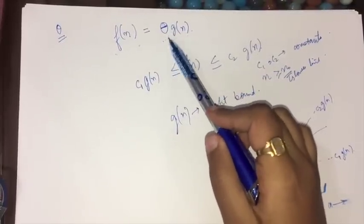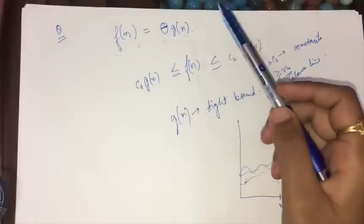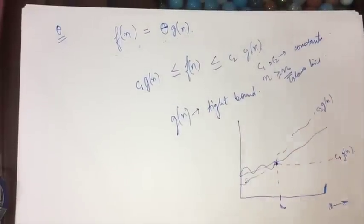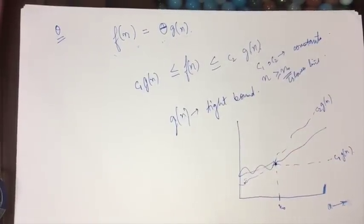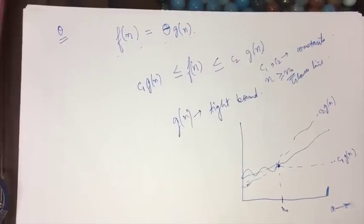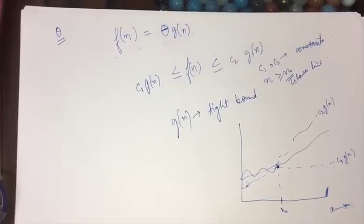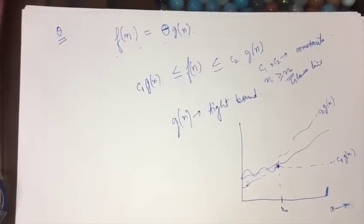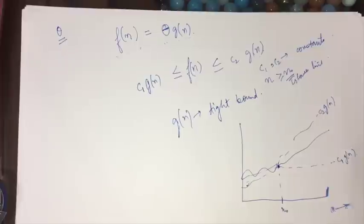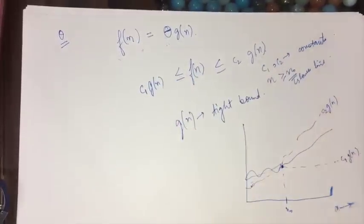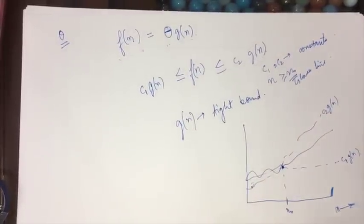We always find complexities in the Theta notation, because we can always convert a function given in Omega or Big O notation to the Theta notation. In the next presentation, we are going to solve a question where we find the function g(n) from a given function f(n). Thank you for watching.